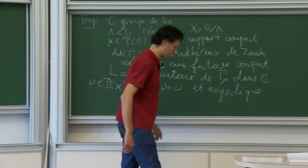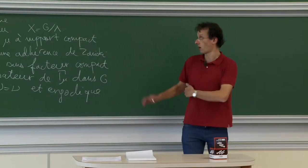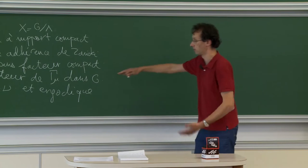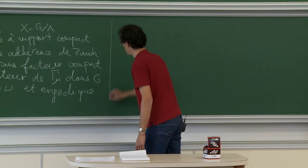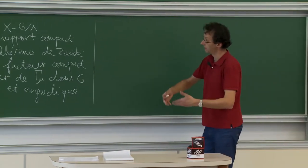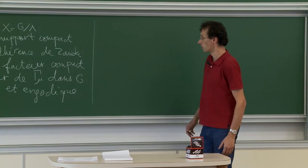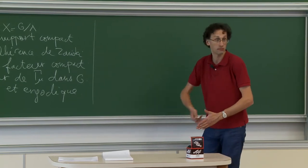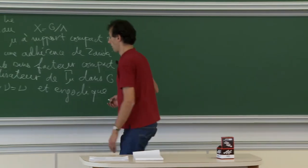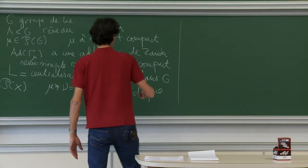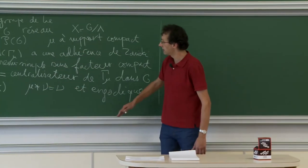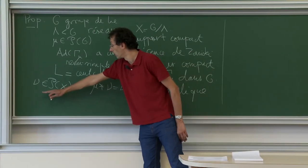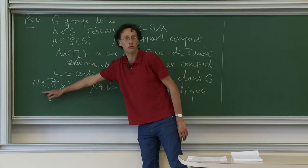I'll finish this demonstration modulo one result. The intermediate result I demonstrated gives a way to create a little homogeneity. Creating homogeneity means creating invariance under small subgroups of G. To launch this technique, one proceeds by induction. The first case would be where ν is atomic.